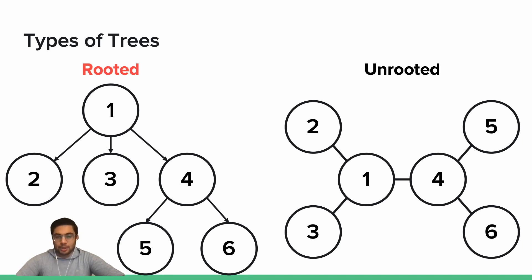All nodes that have at least one child are called internal nodes. Just like with a family tree, a node's parent, grandparent, and so on, all the way to the root are considered that node's ancestors. And a node's children, grandchildren, and so on, all the way to the leaves are considered the node's descendants.